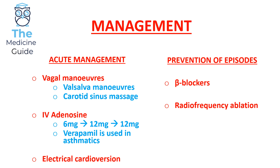Electrical cardioversion can be considered if all else fails. Patients receiving IV adenosine should be informed they may experience flushing, chest pain, and shortness of breath for a few seconds after the dose. For prevention of SVT episodes, beta blockers can be used, and the definitive management to prevent further episodes would involve radiofrequency ablation.